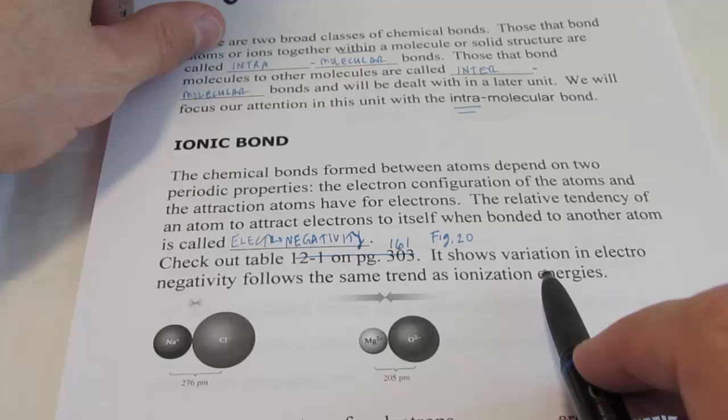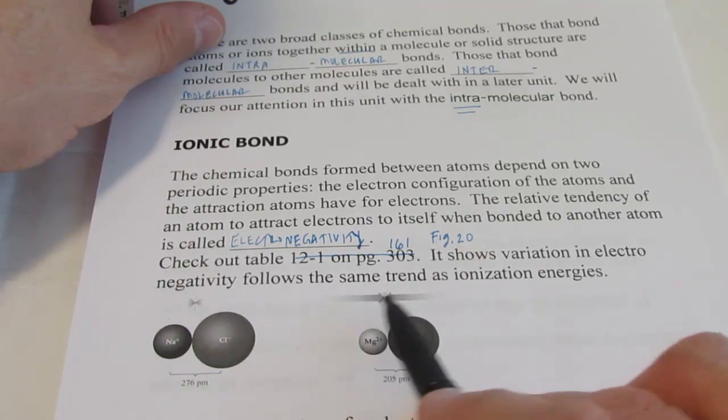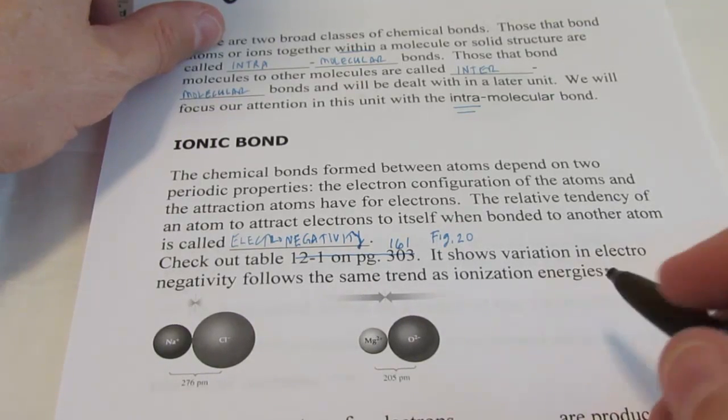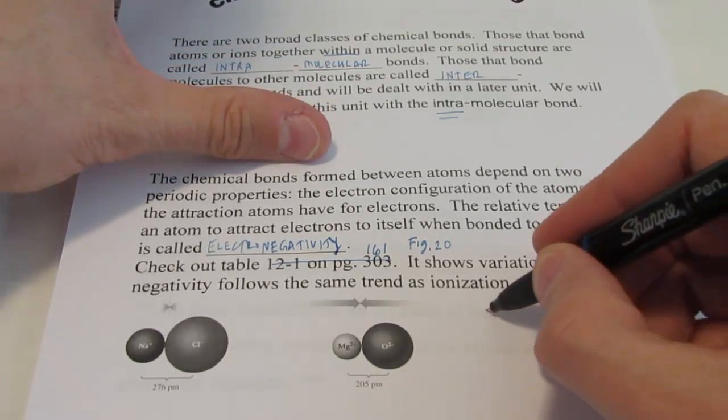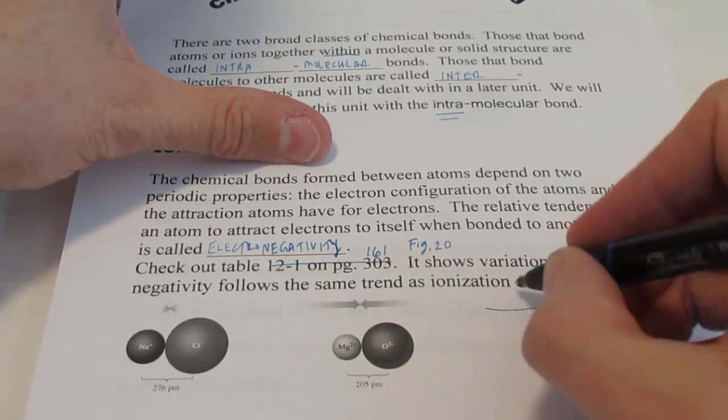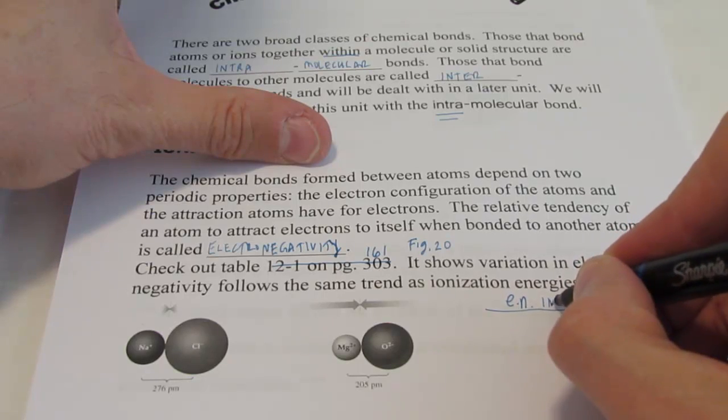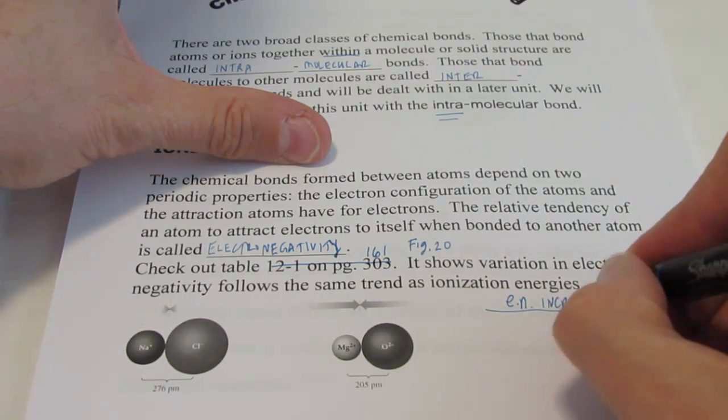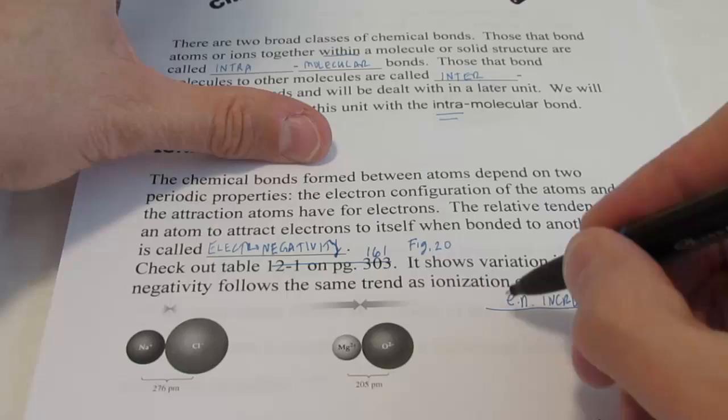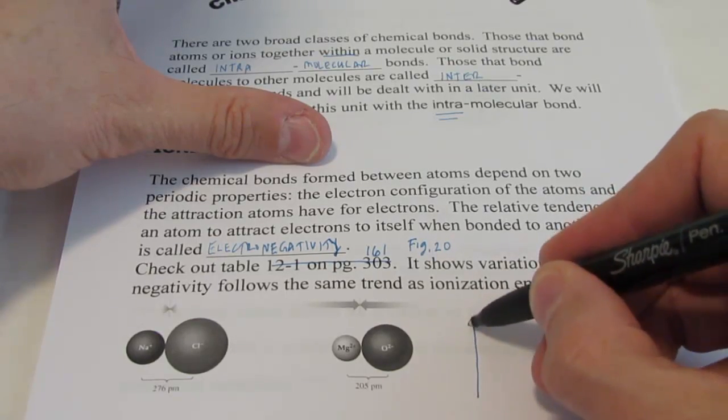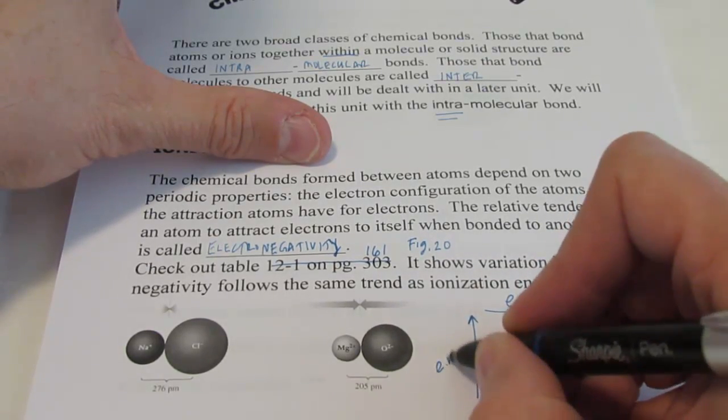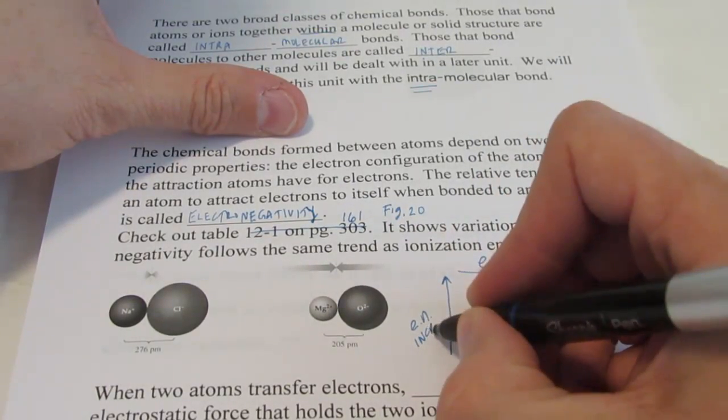It shows variation in electronegativities follows the same trend as ionization energies. As you move to the right, electronegativity increases. And when you move up a group, electronegativity also increases.